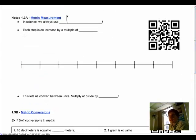So remember in science we always use metric. This is the international standard, so you guys are lucky you get to know two units of measurement. Each step in the metric system, which makes it a really easy system to use, is an increase by a multiple of 10 or a decrease by a divisor of 10.